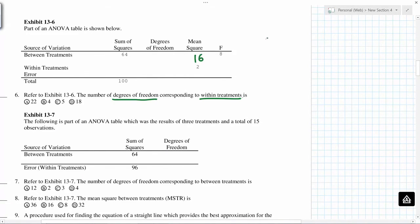0.064 degrees of freedom within treatment, so this must be 16. So 64 divided by sum value, x is 16, so x equals 64 by 16, which is 4, so this is 4 and 100 minus 64 is 36.